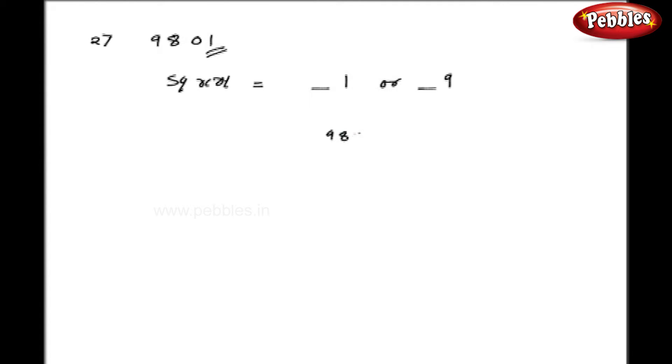Now, let us consider the full number 9801. Now, this figure lies between the perfect squares of 90 and 100, that is 8100 and 10000. So, my square root will be either 91 or 99.